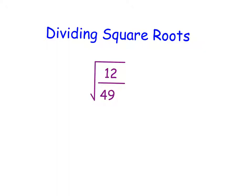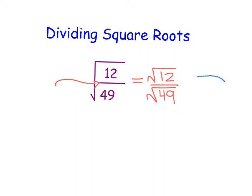If your gut is telling you that you should square root the numerator and then square root the denominator, then you have a pretty good gut when it comes to square root properties. Because if we have a fraction or a division problem inside of a square root, we can rewrite it as the square root of the numerator divided by the square root of the denominator. I've written this now as two separate square roots and I'm going to focus on them one at a time.